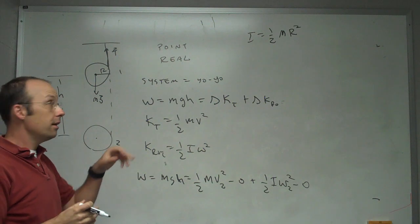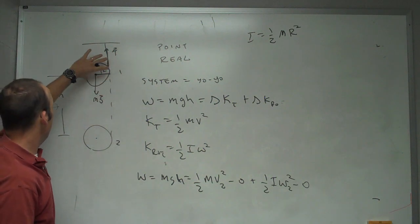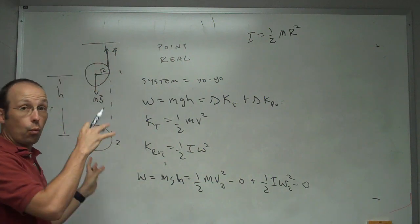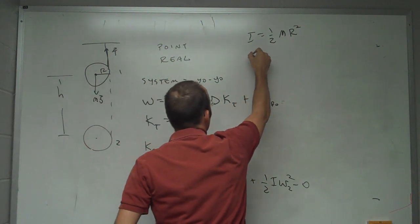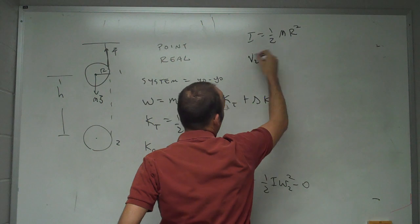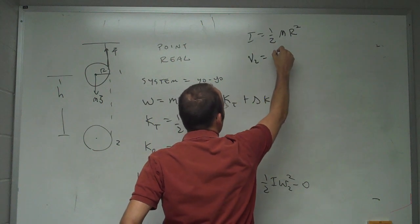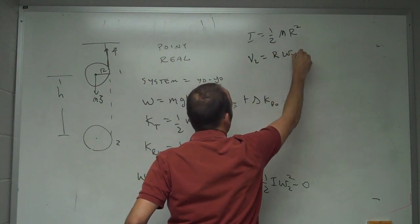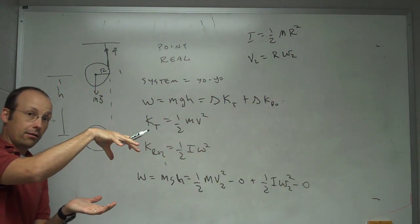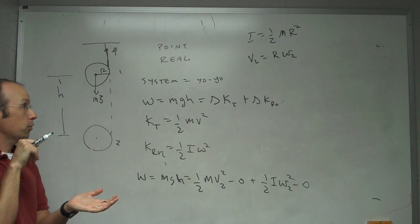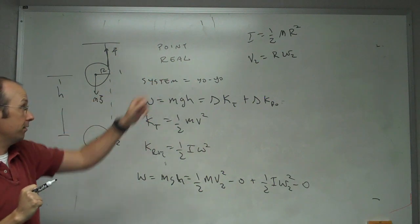Also, I know that if this string is stationary and this is moving and kind of unwinding at the same time without slipping, then v at any point is going to be r omega. That has to be true. If you roll something and it doesn't slide, then there's a relationship between the center of mass and angular speed just like that.